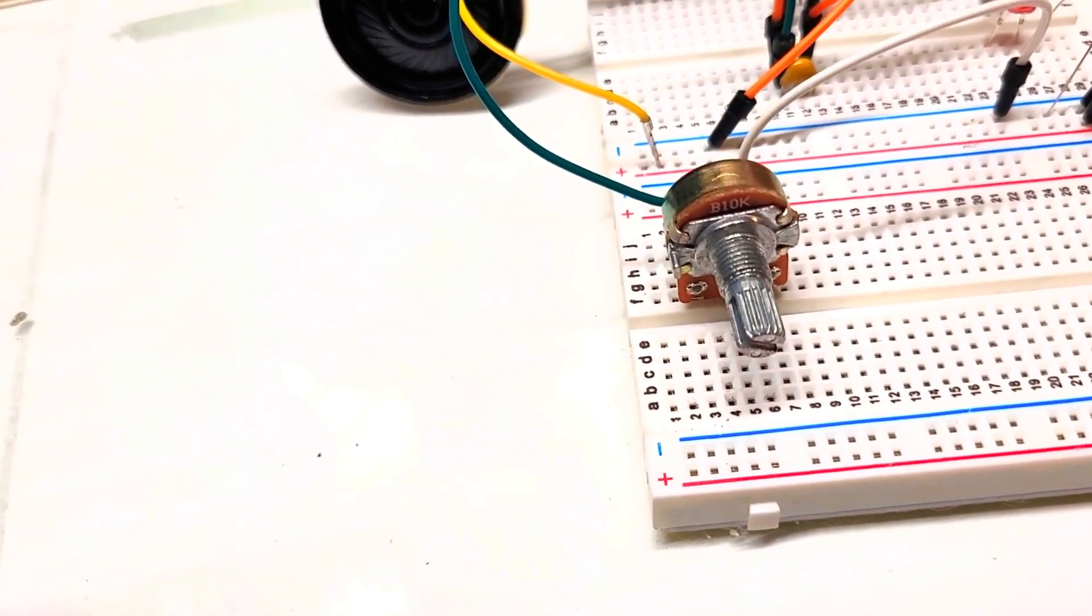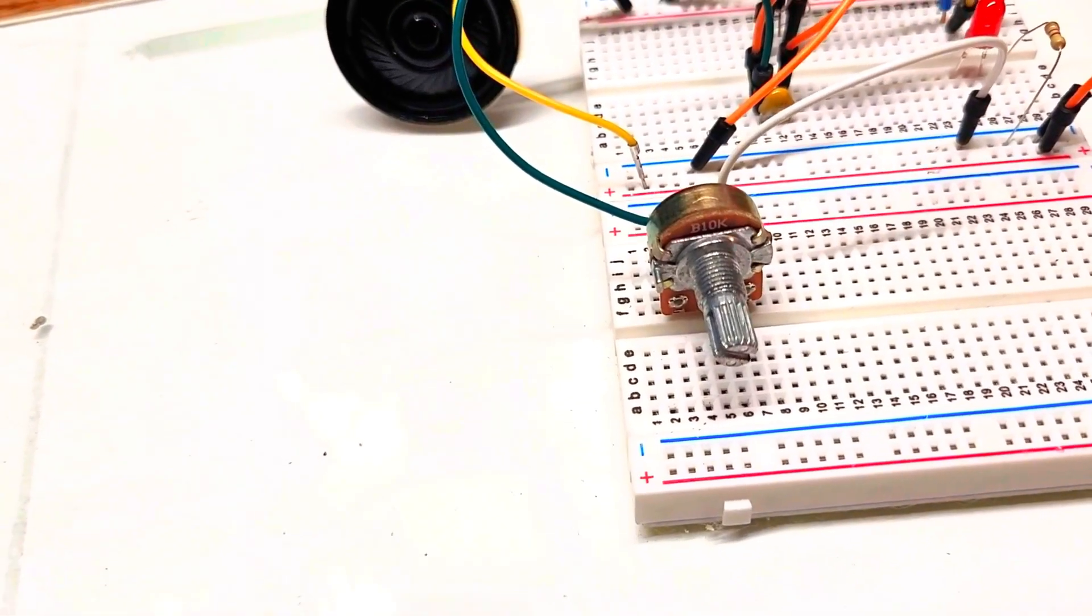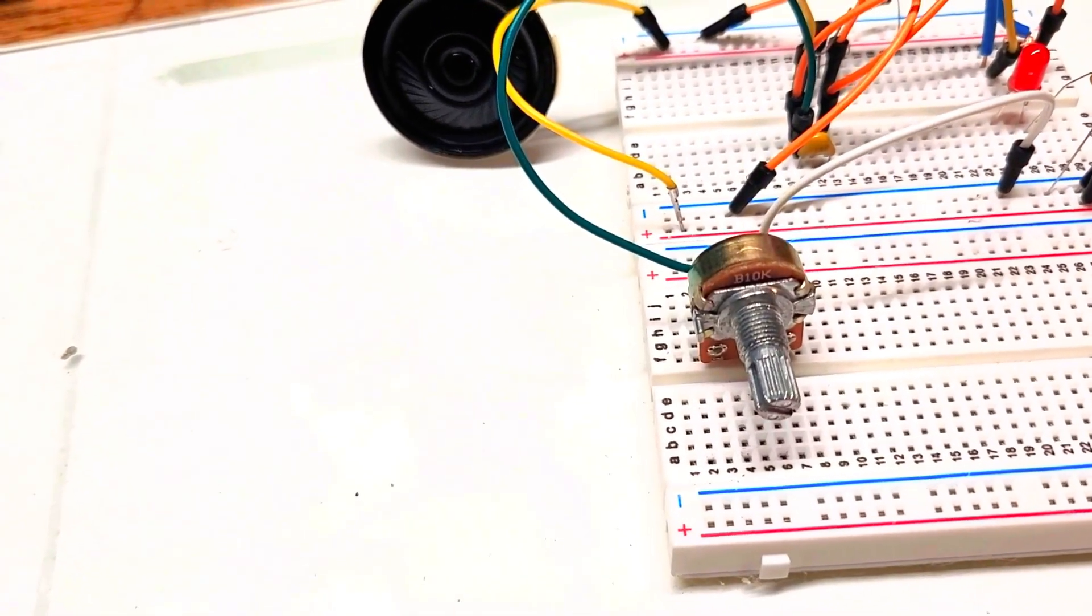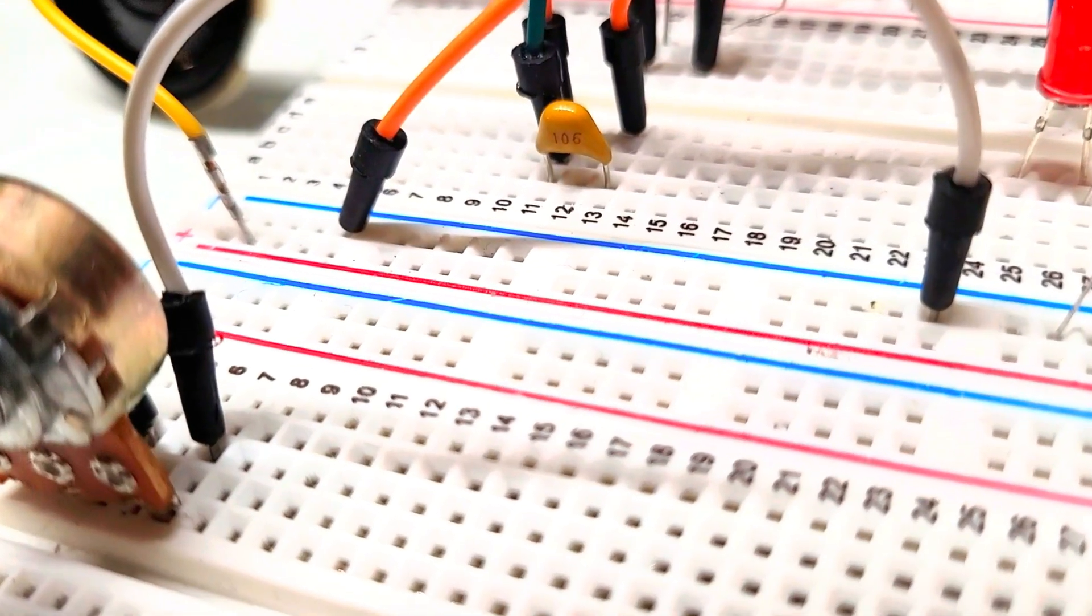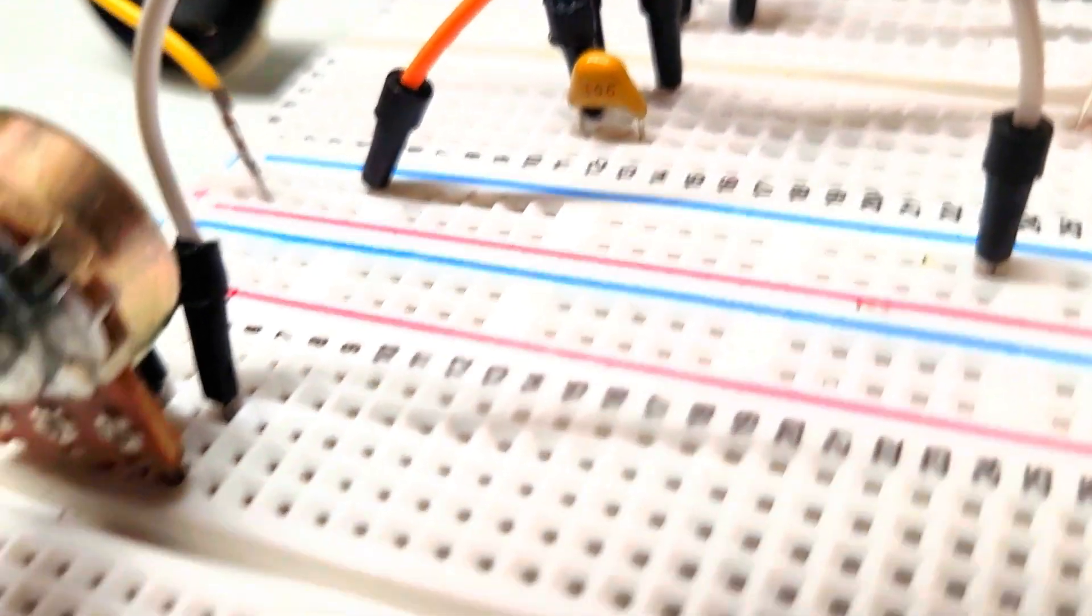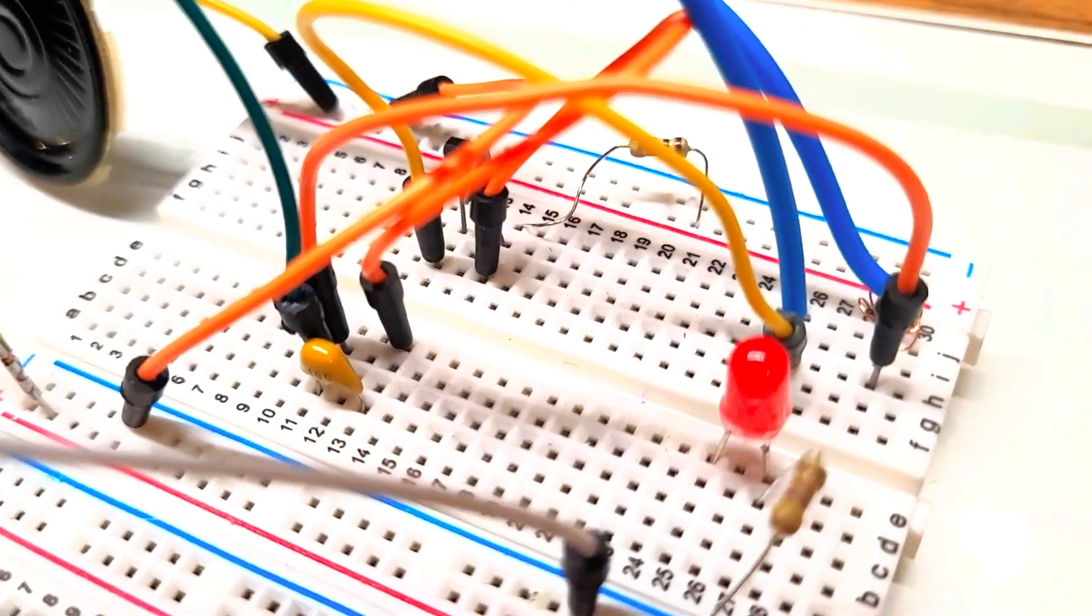For example, it was used to make a flashing LED, but I replaced the LED with a speaker, and I also changed the value of this little capacitor right here.